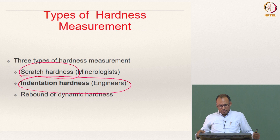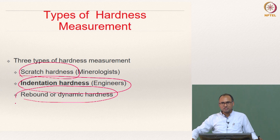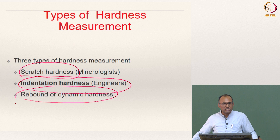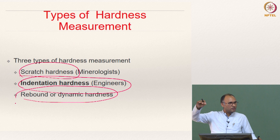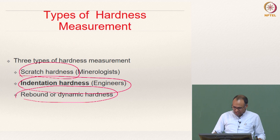For some people, hardness can be rebound or dynamic hardness. You take a ball, drop it on a surface, and the height to which it rebounds tells you the hardness of the surface or the ball. It is like the coefficient of restitution that you have probably studied. If you put a mat on a concrete surface and drop the ball, you will see the rebound distances are different. That is also another measure of hardness. But in this class, let us restrict ourselves to indentation hardness.